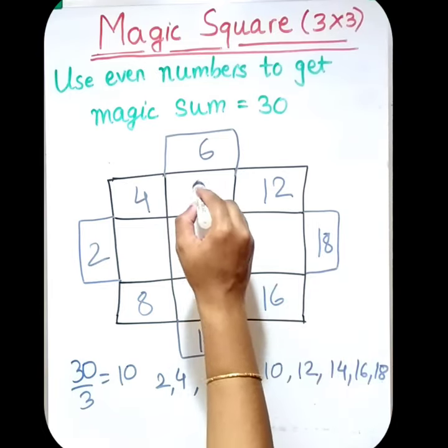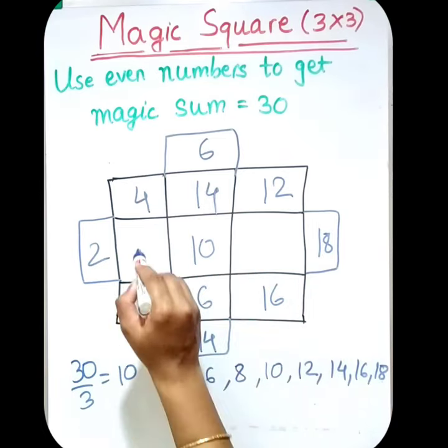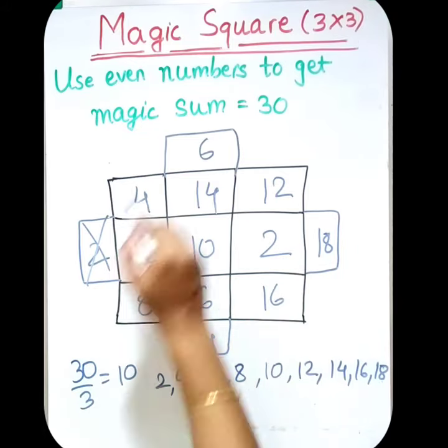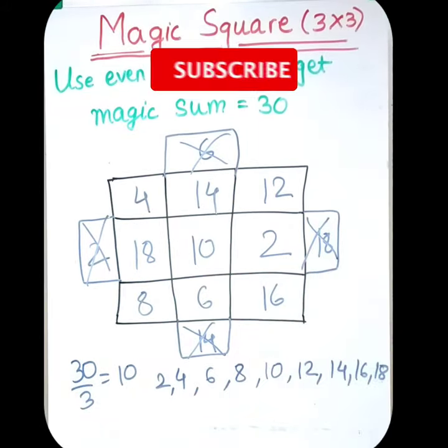Now swap the numbers. So 14 here, 6 here, 18 and 2. Just erase this out of two ways and now we will sum it.